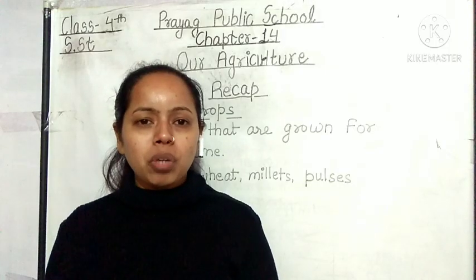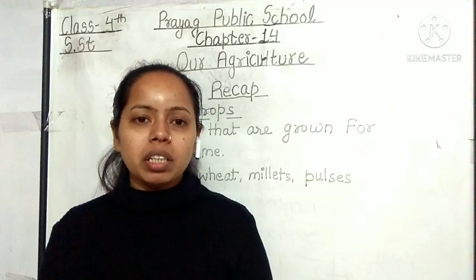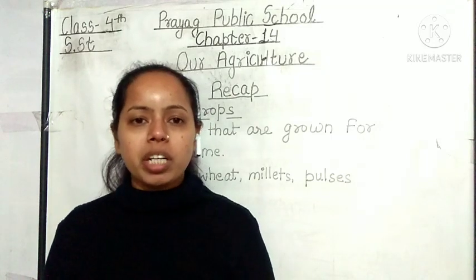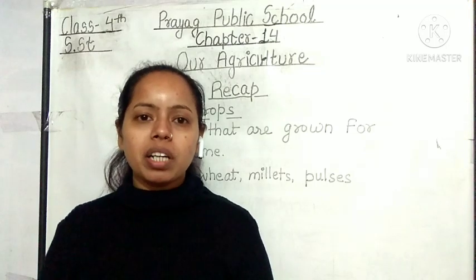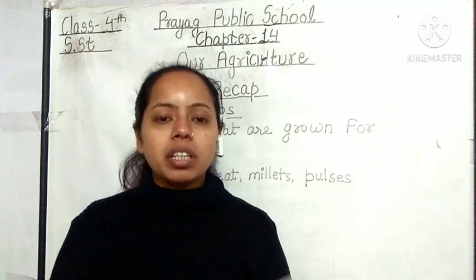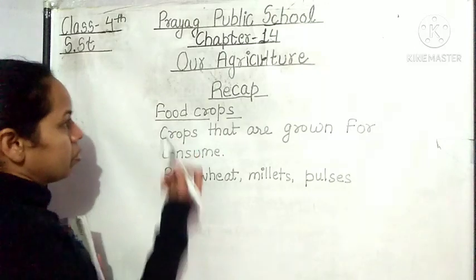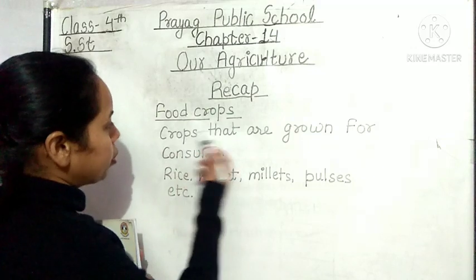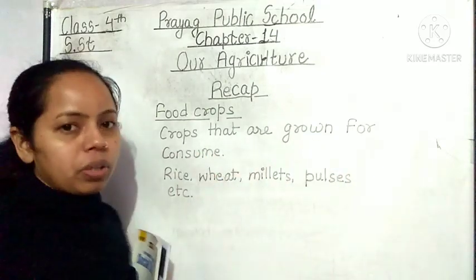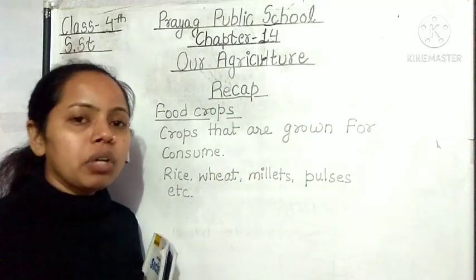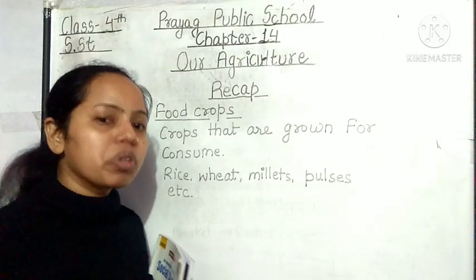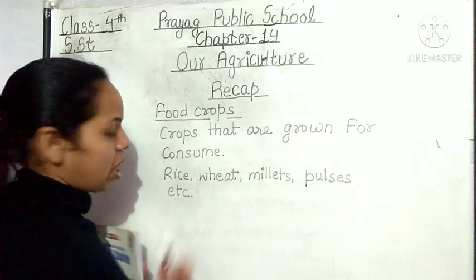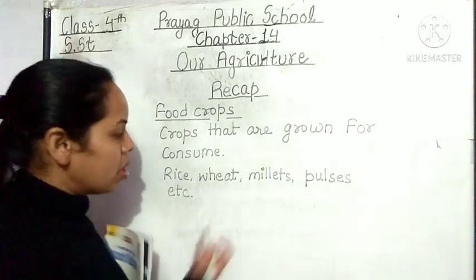Hello everyone, a very good morning to you all. I welcome you all again in our next class. Let's continue our chapter number 14, but before starting a new topic, let's do a quick recap of our previous video. In our previous video we studied about food crops — crops that are grown for consumption are known as food crops. Rice, wheat, millets, pulses, etc. are examples of food crops.